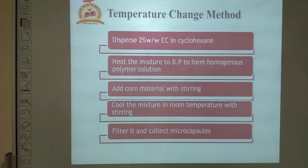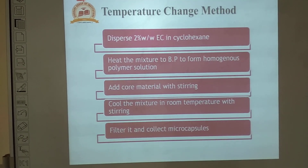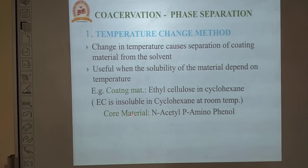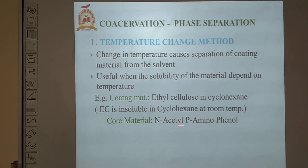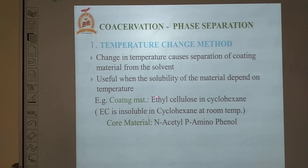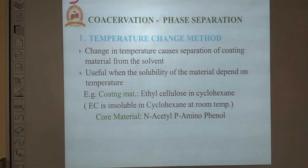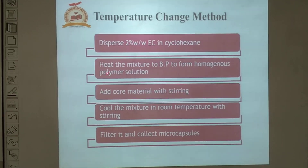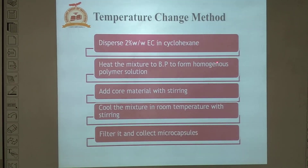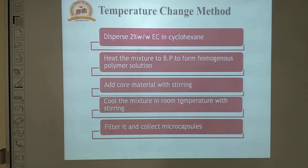The procedure is: disperse 2% w/v ethyl cellulose in cyclohexane; heat the mixture to the boiling point to obtain a homogeneous polymer solution; add the core material with stirring; cool the mixture to room temperature with stirring; and filter to collect the microcapsules.